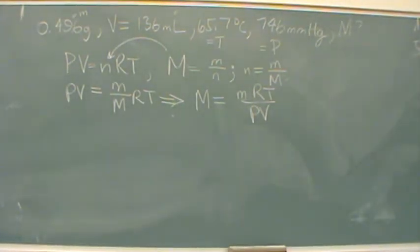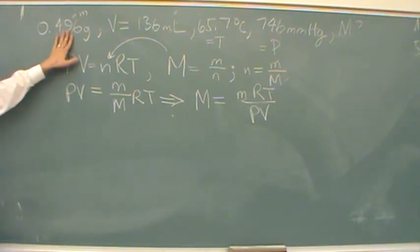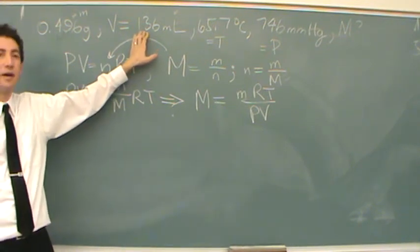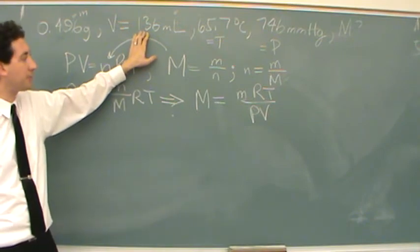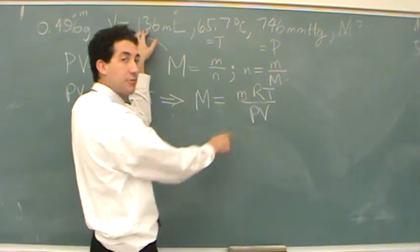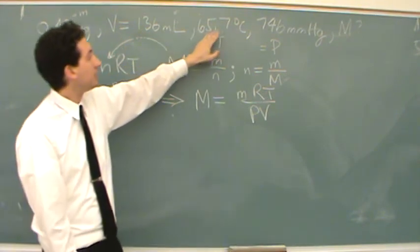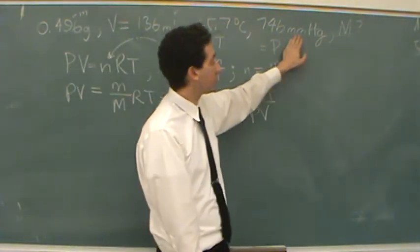Capital M will be little m RT over PV. That's the formula I'm going to use to solve, and I have everything given. The only problem I'm going to run into is they're not in the right units. So mass, that's fine. This should be in liters, because I recommend that you follow the ideal gas law constant, which is in liters, atmospheres per mole Kelvin. So this should be in liters, this should be in Kelvin, and this should be in atmospheres.